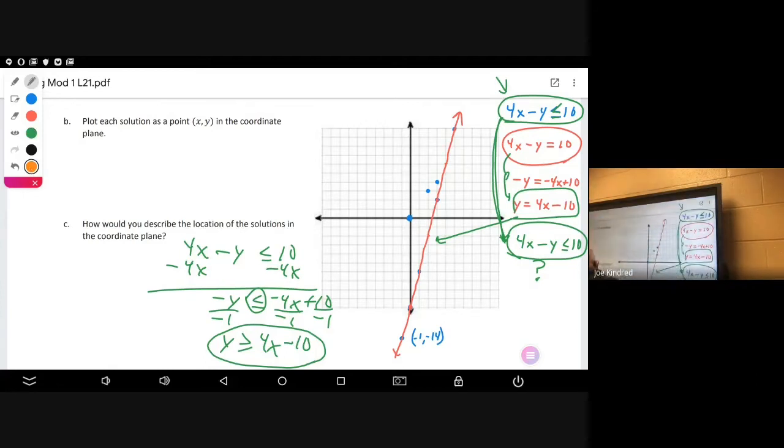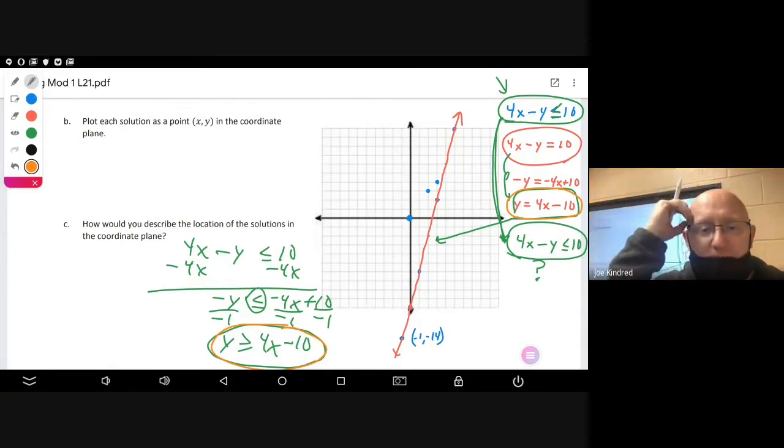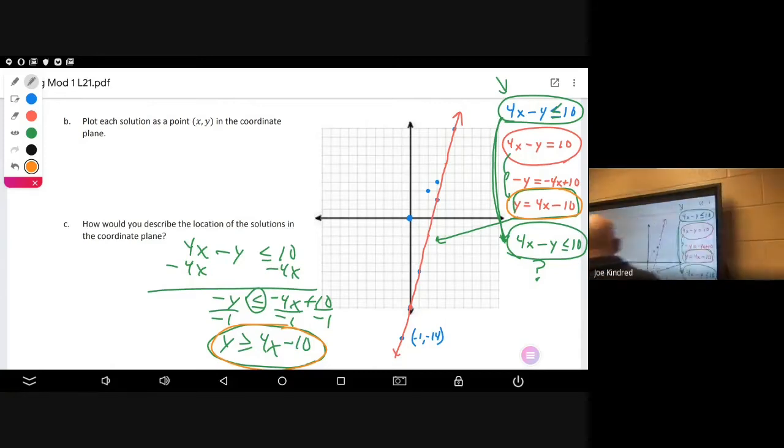We divide by a negative one, and when we do that, that changes the sign to greater than or equal to. So y is greater than or equal to 4x minus 10.